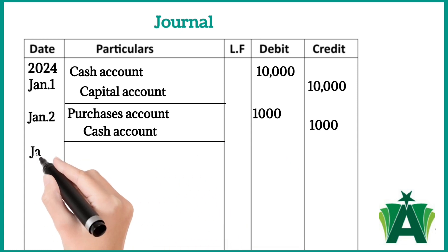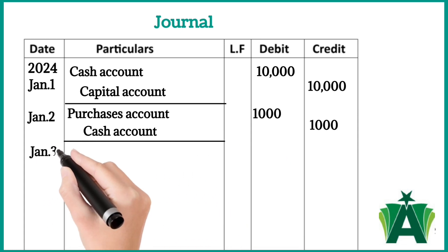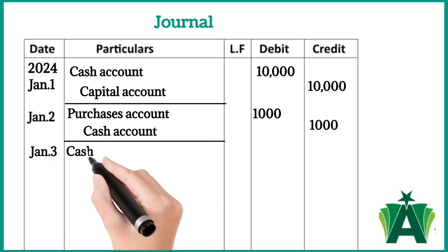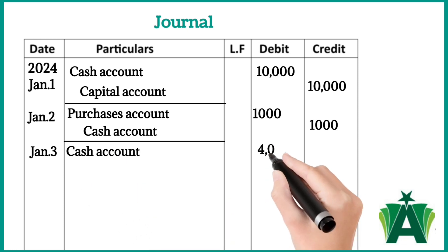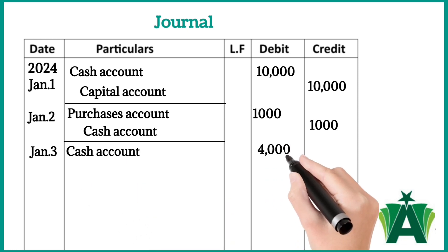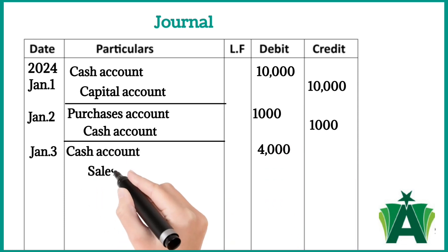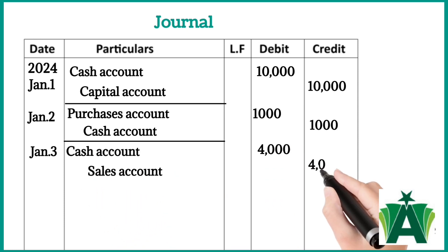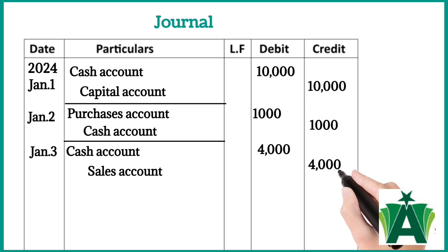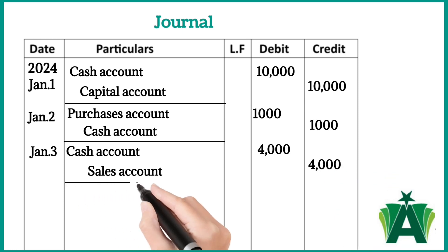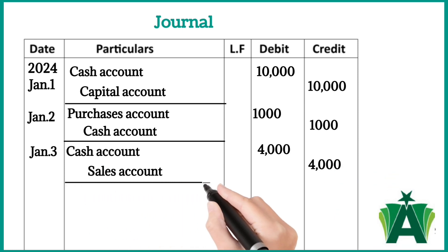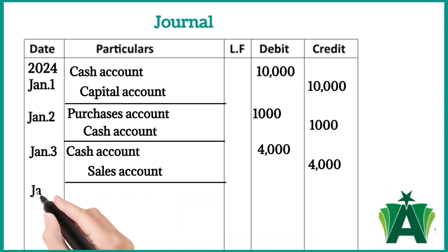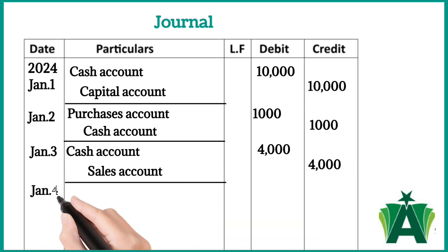The third transaction: sold goods for cash for $4,000. Cash account is debited — this increases the value of cash. Sales account is credited because revenue increases in the business.